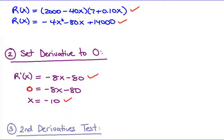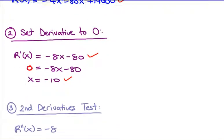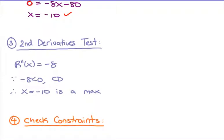But we just want to make sure you actually get a maximum, so you do a second derivatives test. Take the second derivative and see what it equals to. If you have an x value, you sub in the negative 10, but I didn't have an x value. So negative 8 is less than zero, which gives you a concave down. That means that at x equals negative 10, I get a maximum. That matches my question, having a maximum revenue.